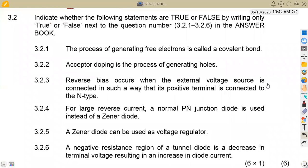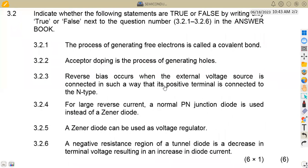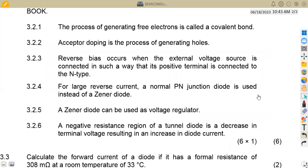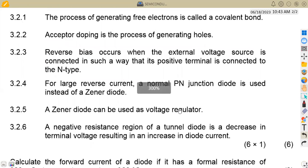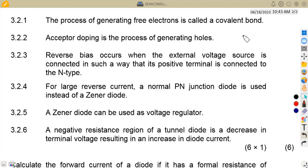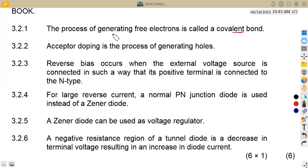On 3.2, indicate whether the following statements are true or false by writing only true or false next to the question that you are given. The process of generating free electrons is called covalent bond. This is actually false. Remember that the process of generating free electrons is called donor doping. So that is a condition where we are dealing with donor doping in this case.